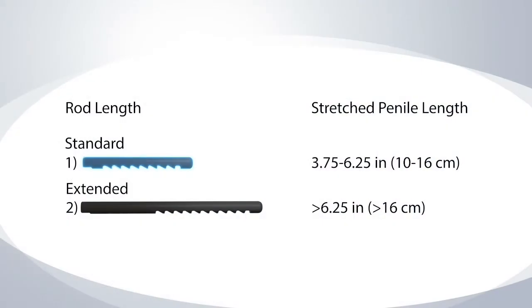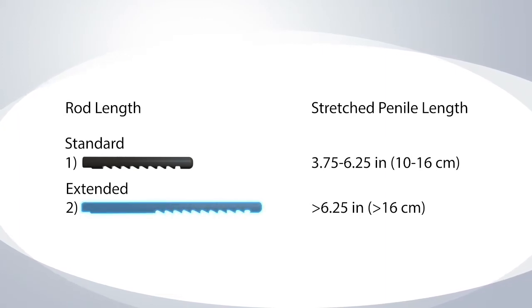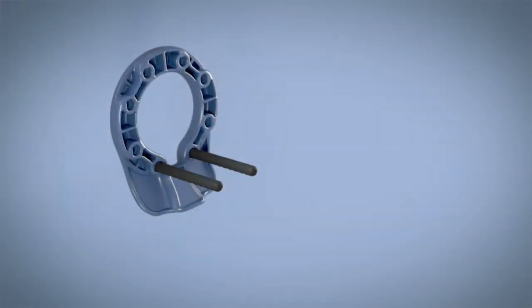The RestoreX device comes with the standard rods assembled for penile lengths greater than 6.25 inches or 16 centimeters. The extended rods are in the RestoreX box. If the extended rods are needed, remove the standard rods by unscrewing them and then attach the extended rods to the pelvic ring as shown.